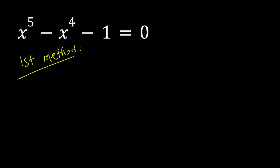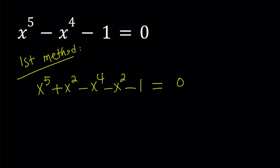For my first method, I want you to notice that some equations are special. This is a special quintic, so always check these kinds of things. I'm going to be adding and subtracting x squared to this expression, and you'll know why in a little bit. So I'm going to add x squared first, and then subtract, so our equation is balanced.